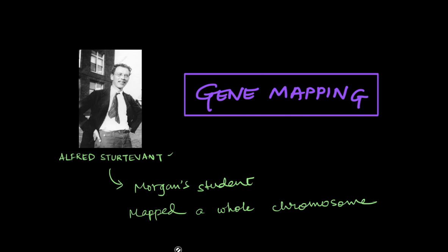Gene mapping was established by Alfred Sturtevant, a brilliant scientist who was also a student of Thomas Morgan. Morgan and his team, along with Sturtevant, were studying a fruit fly cross, and while studying it, Sturtevant realized that if he collected all the data from this cross he would be able to pinpoint exactly where each and every gene is on the chromosome. That's how Sturtevant ended up mapping a whole chromosome.